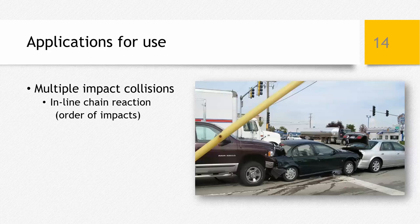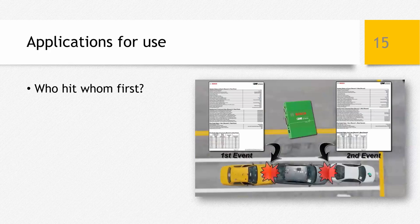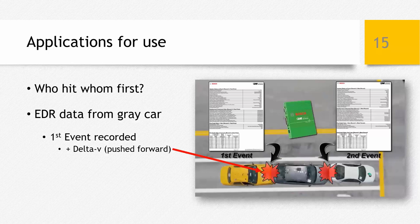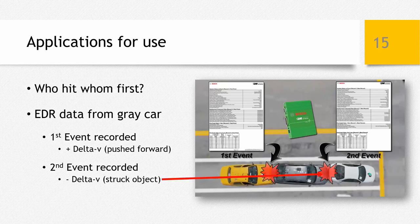How about multiple impact collisions, such as an inline chain reaction crash — who hit whom first? The parties are always pointing fingers at each other, there were no witnesses, and physical evidence at the scene likely won't answer the question. In this example, data downloaded just from the gray car in the middle showed that two separate events occurred in rapid succession. The first impact had a positive delta V, indicating the vehicle was pushed forward — the gray car was hit from behind. The second impact showed a negative delta V, indicating the gray car then hit the white car in front of it.